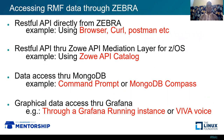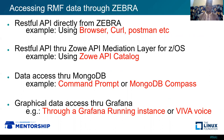A user can access RMF data through Zebra in four ways. The first is a REST API call directly to Zebra, using a browser or Postman. The second is through the Zoe API mediation layer using Zoe API catalog. The third is data access through MongoDB, using command prompt or MongoDB Compass. The fourth is graphical data access through Grafana, which my mentor was able to use to access real-time charts directly from his phone.